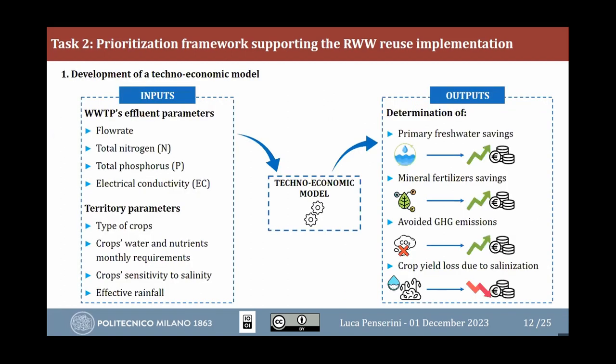Regarding the model, we considered effluent parameters — flow rate, nutrients content, and conductivity as a proxy for salinity — and territory parameters including crop type, water and nutrient requirements, sensitivity to salinity, and weather/rainfall conditions. These inputs feed the model to produce four outputs: saving on primary freshwater, saving on mineral fertilizers, avoided greenhouse gas emissions from mineral fertilizer production (all positive), and crop yield loss due to salinization from increased salinity of irrigation water (negative). These four outputs were converted into economic terms to provide a single index.